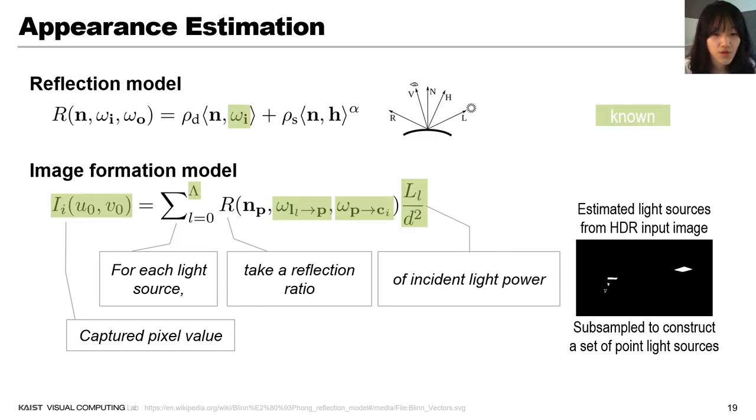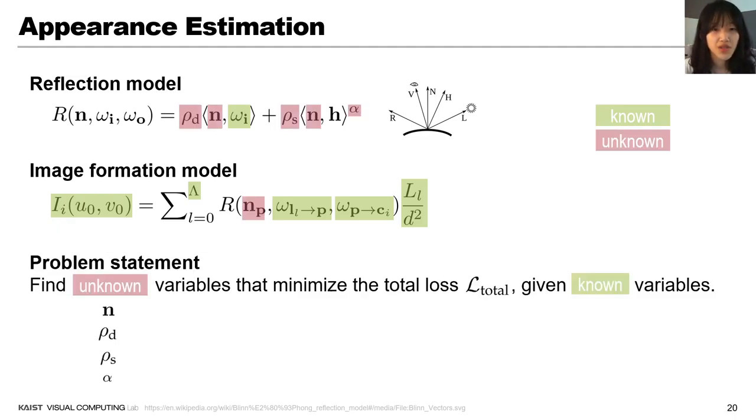Here, the light sources are estimated from an HDR image at the center view and subsampled to construct a set of point light sources. These are known variables in our image formation model and these are unknown. Our problem statement is to find those unknown variables that minimize the total loss given known variables.